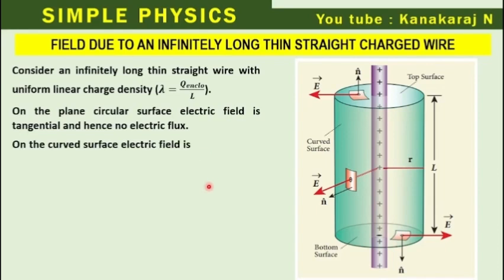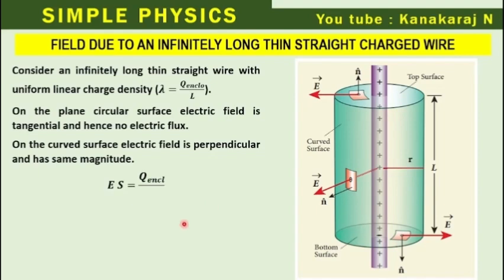On the curved surface, the electric field is perpendicular and has the same magnitude. By Gauss's law, E times S equals q enclosed divided by epsilon 0. For the curved surface, the surface area S is 2 pi R L. Instead of q enclosed, we can write lambda times L, and then L on either side cancels.